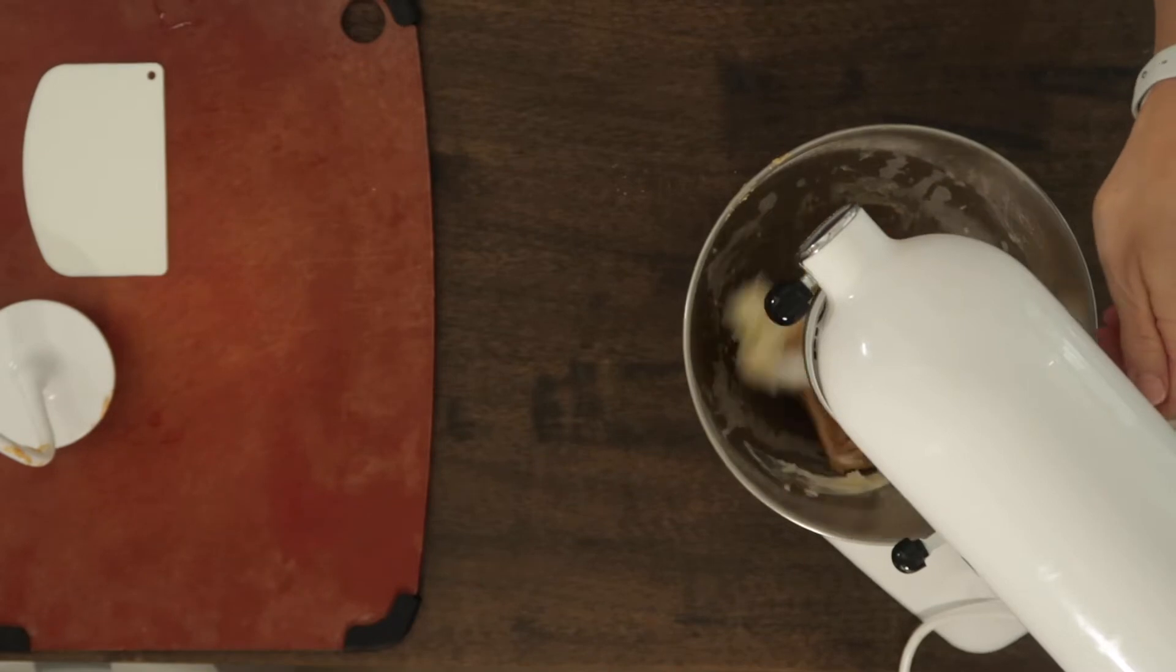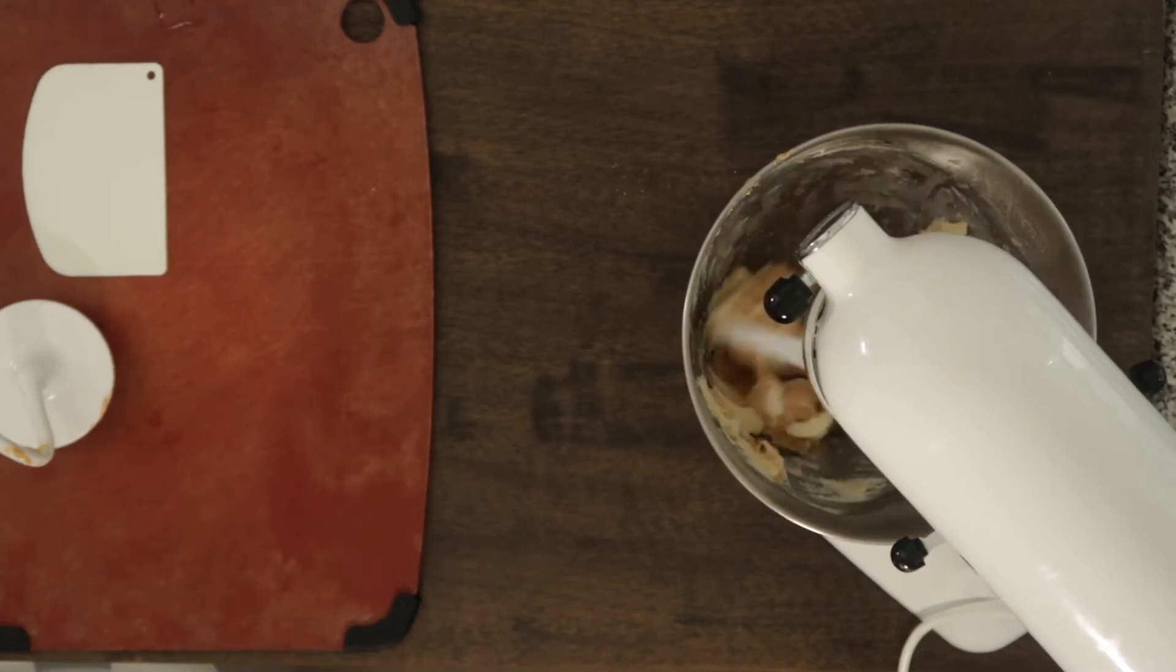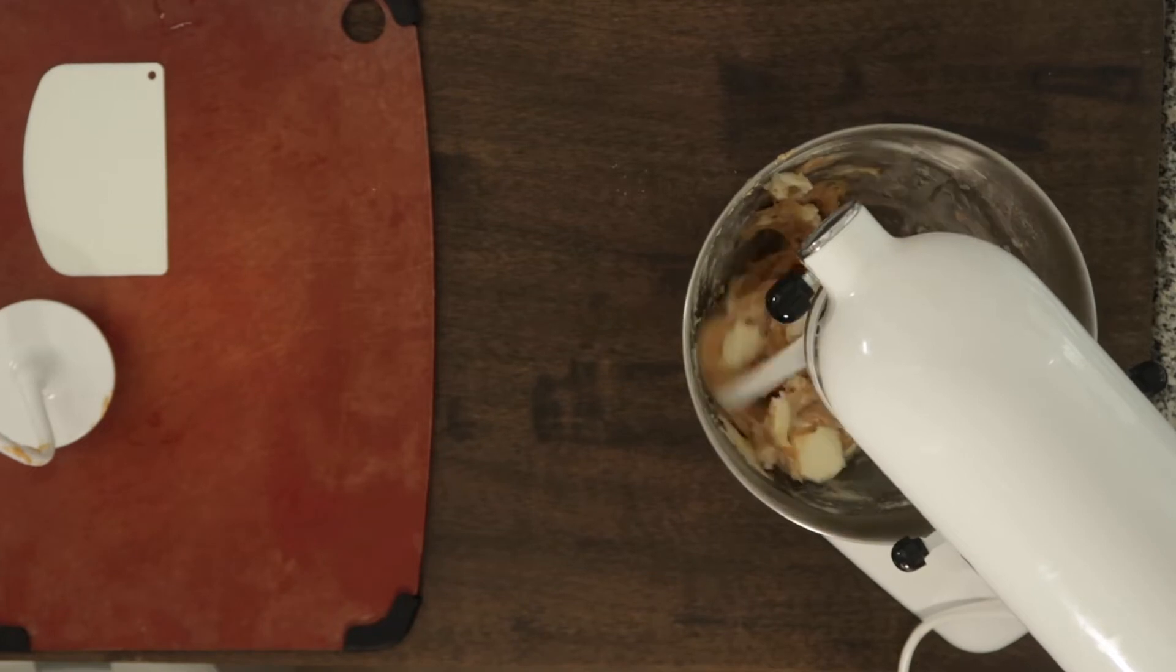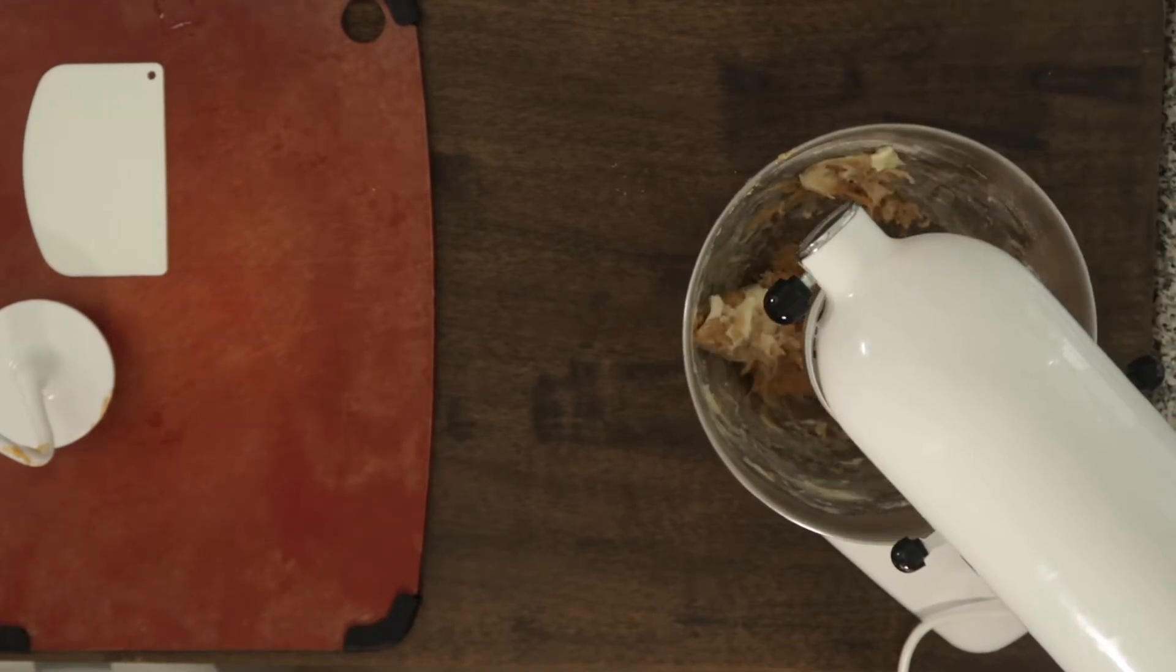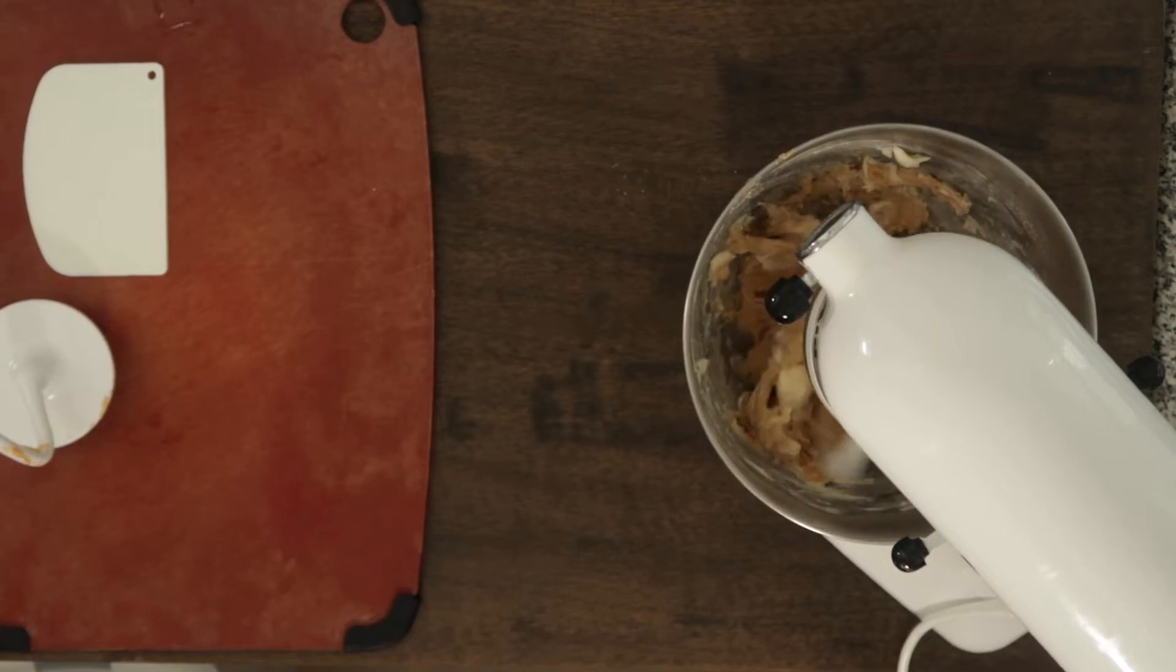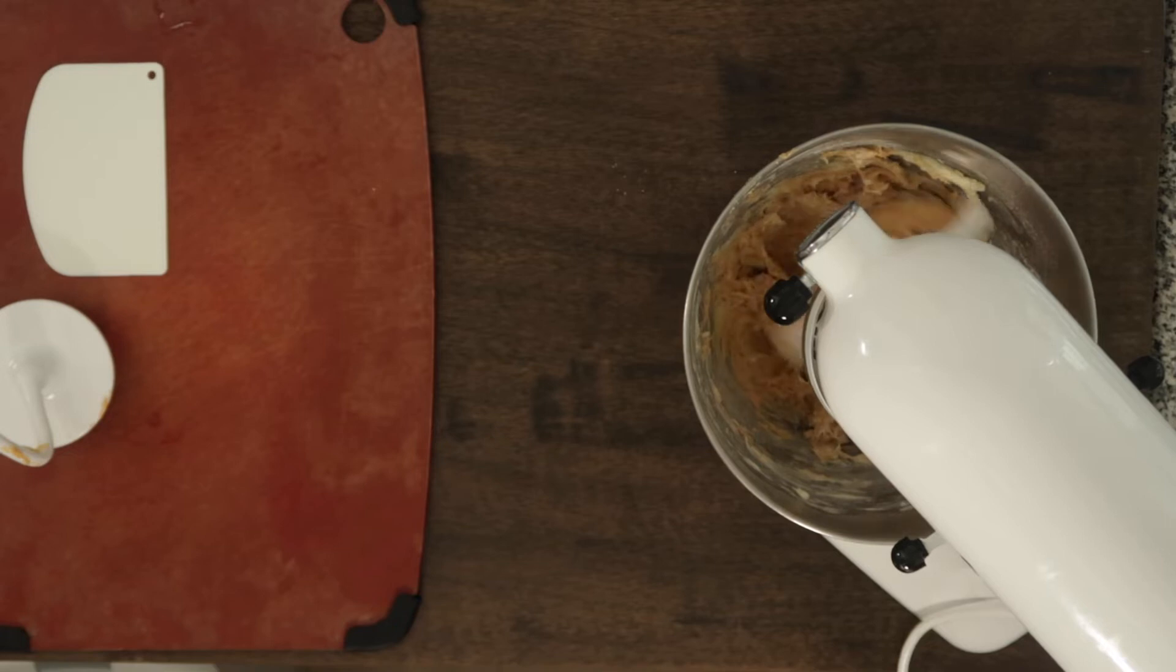That way it mixes evenly and once that's mixed evenly, you can remove the paddle and then change to the dough hook and get into the final mix. And that means you're in the home stretch with mixing this dough. It will look soft and sticky, that's typical for brioche so don't worry.